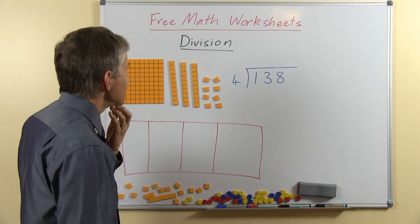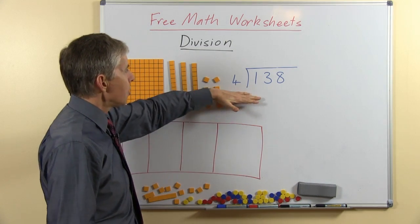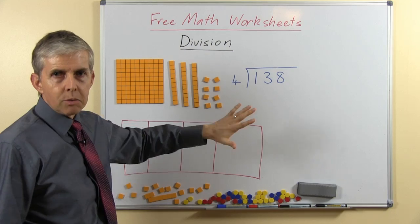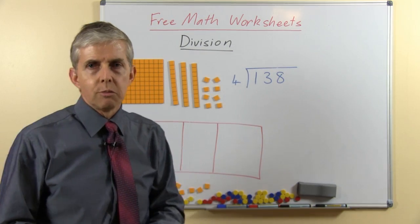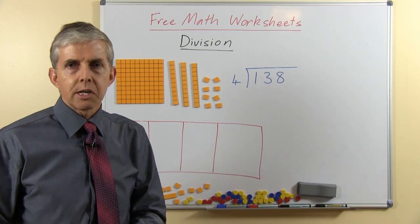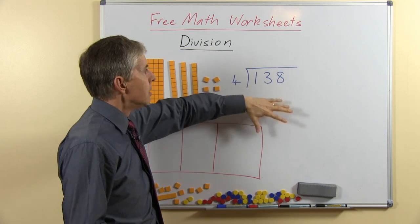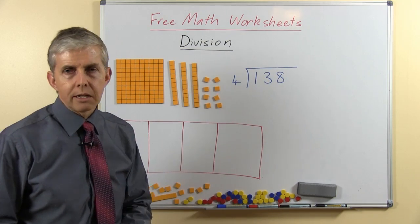So this is our example question today, 138 divided by 4. I'm using base 10 blocks because they do such a fantastic job of illustrating the process and revealing what's hidden and what this process actually involves.